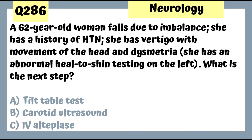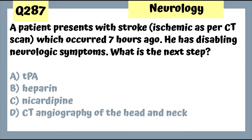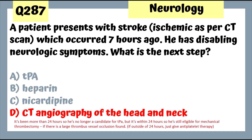Question 286: A 60-year-old with falls due to imbalance, vertigo with head movement, and dysmetria — likely a stroke, so hearing out IV access. Carotid ultrasound is not for emergency situations. Question 287: A patient with stroke occurring seven hours ago (beyond 4.5-hour window) with disabling neurologic symptoms — get CT angiography of the head and neck to determine if thrombectomy should be done within the first 24 hours.